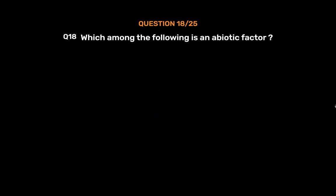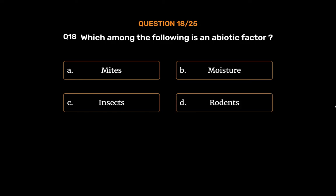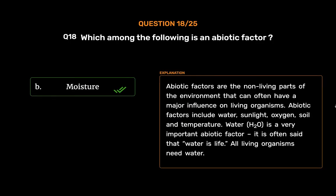Question No. 19: Which among the following is an abiotic factor? Option A: Mites, Option B: Moisture, Option C: Insects, Option D: Rodents. The correct answer is Option B, Moisture. Abiotic factors are the non-living parts of the environment that can often have a major influence on living organisms. Abiotic factors include water, sunlight, oxygen, soil, and temperature. Water (H₂O) is a very important abiotic factor — it is often said that water is life, and all living organisms need water.